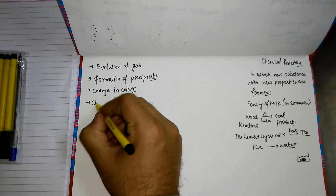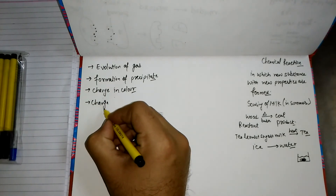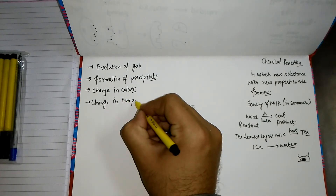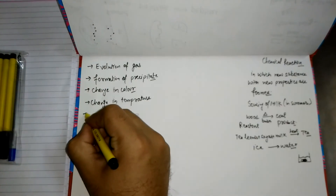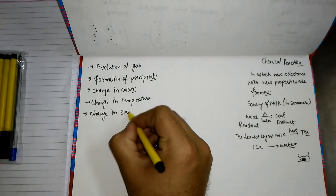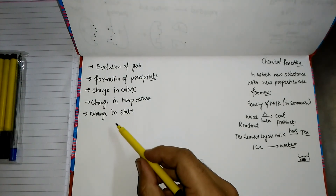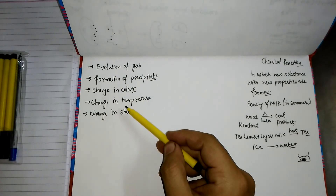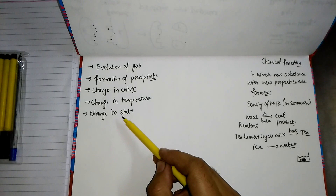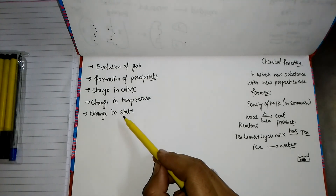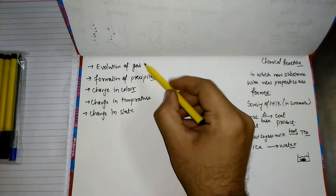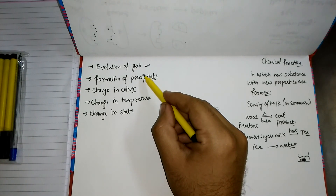If there is a change in temperature — either a rise or a decrease — we say a chemical reaction takes place. Similarly, if there is a change in state, we say a chemical reaction has occurred. Any one of these general characteristics can tell us whether a chemical reaction has taken place. For example, if mixing two substances produces a gas, we say a chemical reaction has taken place.